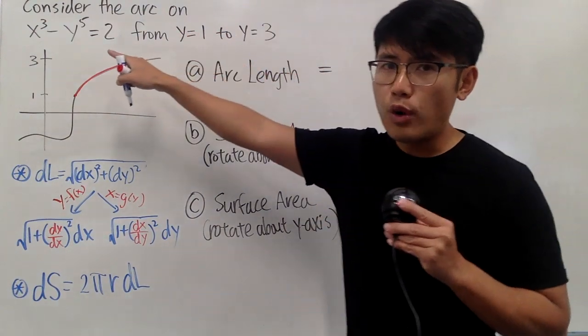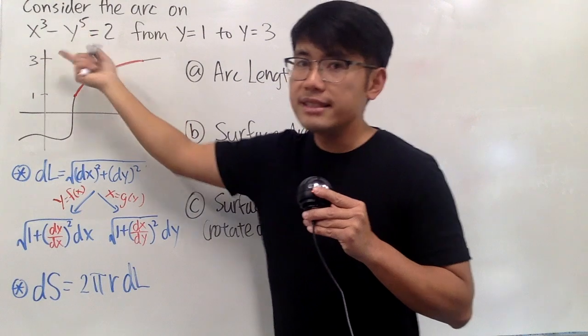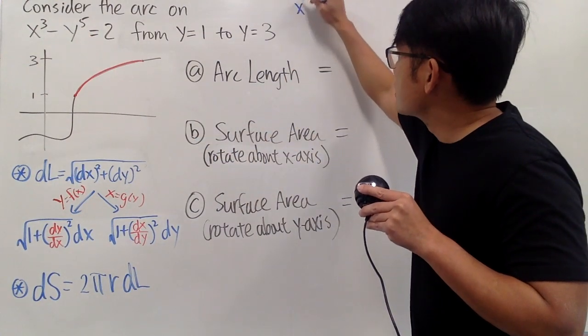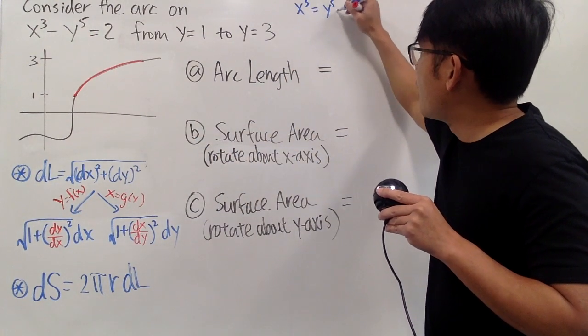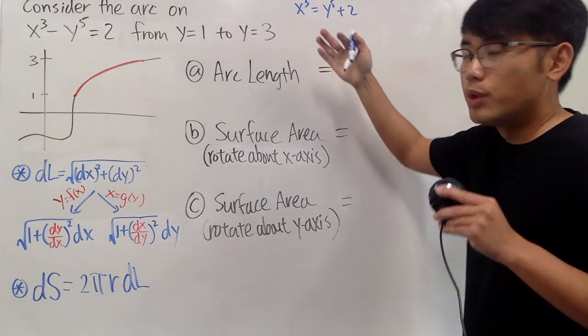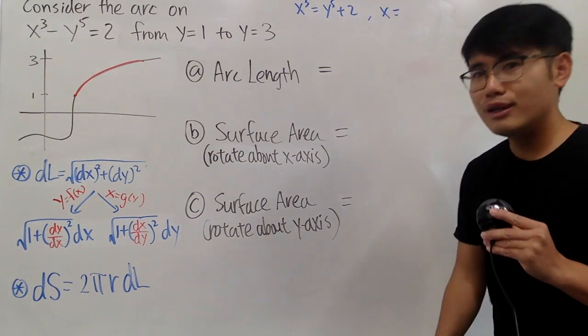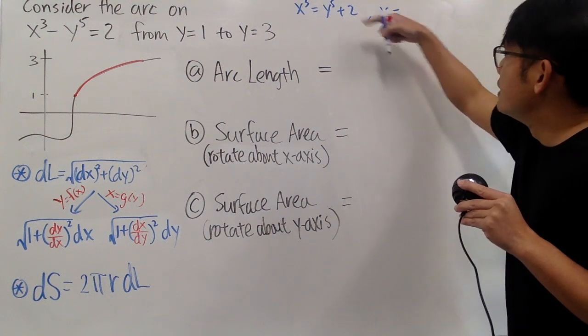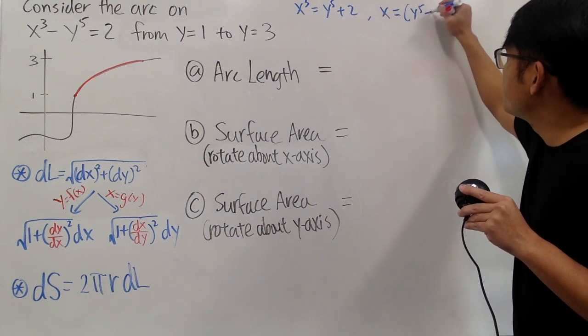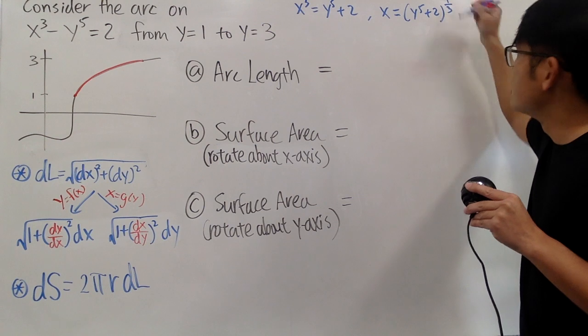So here we go. Of course, we can add this on both sides, so we can get x cubed equals y to the fifth power plus two, and we will just take the cube root on both sides, so this means x is by itself now, and we get, let's write it as y to the fifth plus two raised to the one-third power.